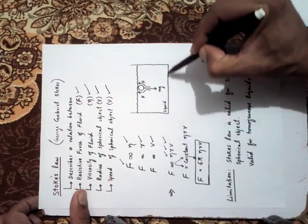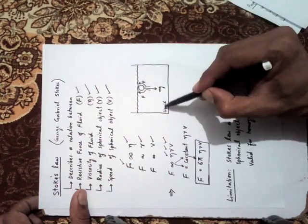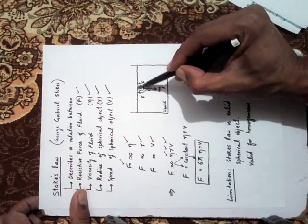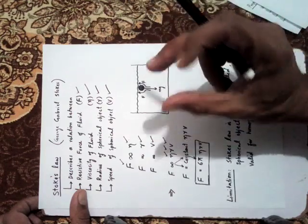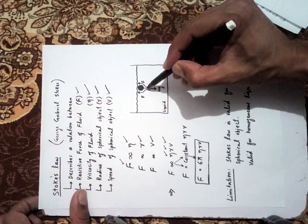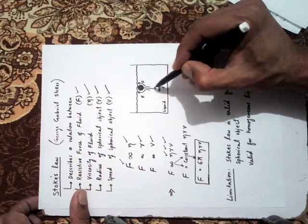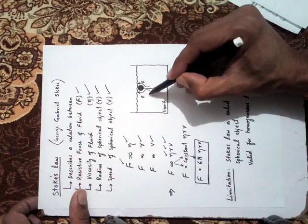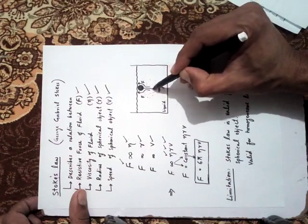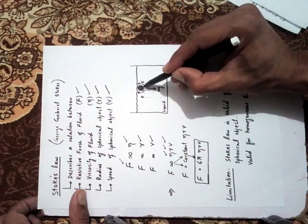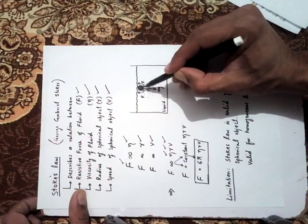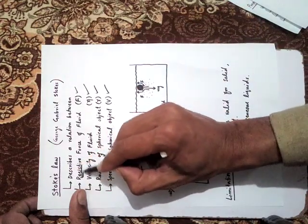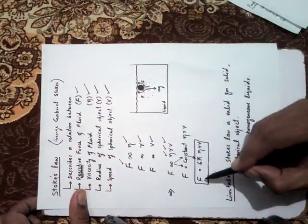Consider a pot filled with liquid. If you dip a ball into it, the weight mg acts downward, taking the ball down. As it moves down, the liquid molecules strike the surface of the ball and produce an upthrust resistive force. This upthrust force acts upward. This resistive force is given by F = 6πηrv. This was all about Stokes' law.